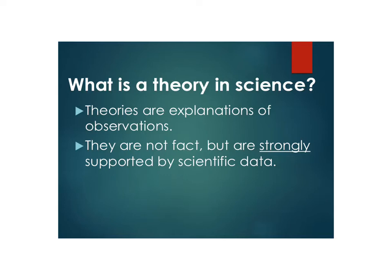What a theory is in science is an explanation of observations that have been made. There have been some data collected, we've seen some things, and we come up with an explanation for it. That's what a theory is. Theories are not fact, but are strongly supported by data.